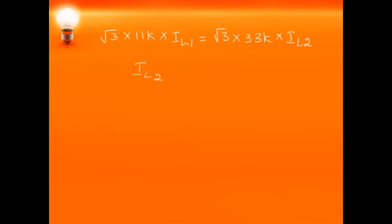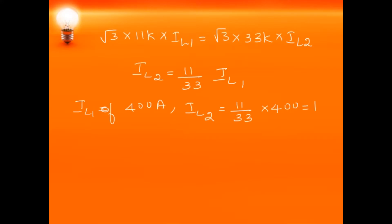Therefore IL2 = (11/33) × IL1. With a primary current of 400 amperes, IL2 = (11/33) × 400 = 133.3 amperes. The current through the secondary of the CT on the primary side is 5 amps. Since the CTs on the primary side are connected in delta, the current flowing through the pilot wire will be 5 × √3 amperes. The CTs on the secondary side, connected in star, will have a current of 5√3 in the secondary.